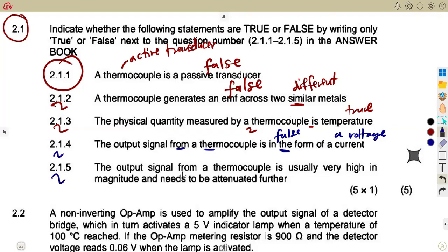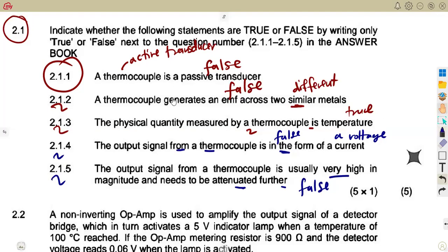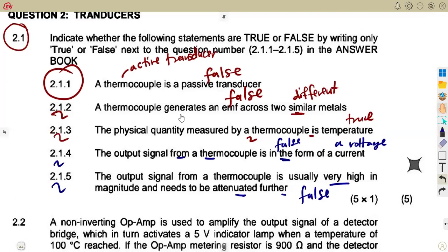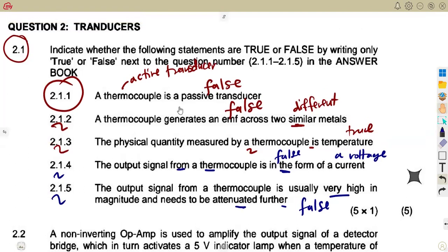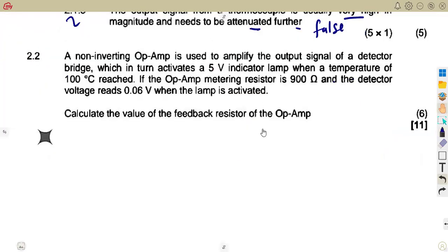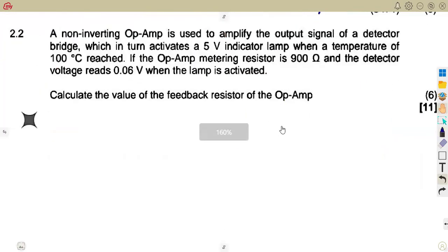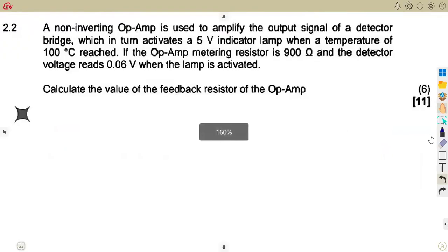Then the output signal from the thermocouple is usually very high in magnitude and needs to be attenuated further. No, this is false. There is nothing like that. So that was your theory. Make sure you go through a thermocouple. Your syllabus, depending on the textbook that you are using, some they do not work with the thermocouple as it is. But do make sure that you revise on a thermocouple, work with a thermocouple. You can even use your Google to search for that.